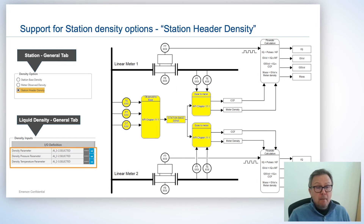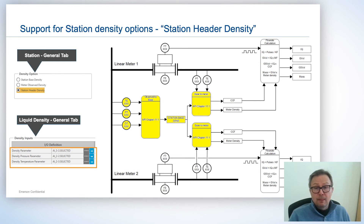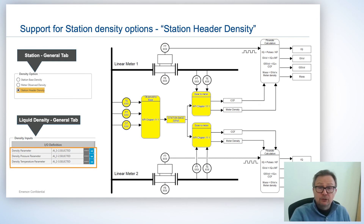The third option is station header density. Here we're actually measuring the density, but not at the meter pressure and temperature — it's at a different pressure and temperature from a header. We measure the density at the header pressure and temperature conditions, then use API Chapter 11 to get to the base density, and then use Chapter 11 again to get to the meter density. So those are the three methods: station base density, meter observed density, and station header density.